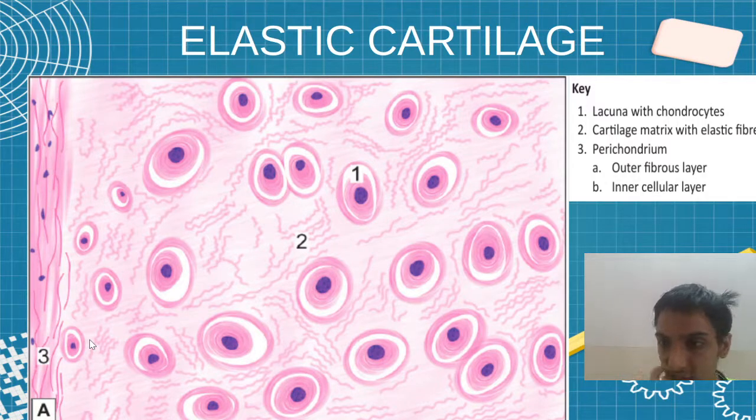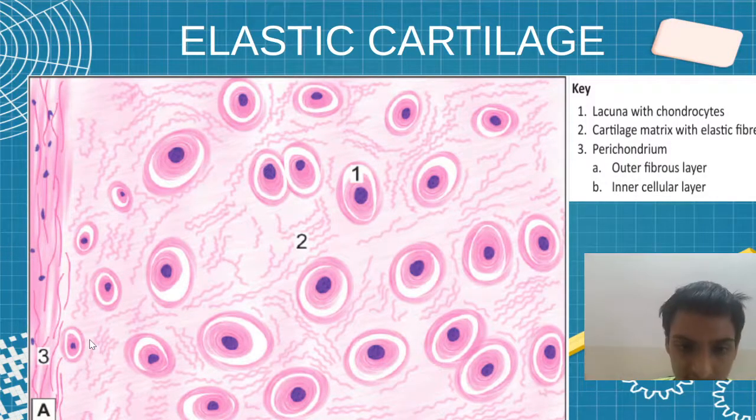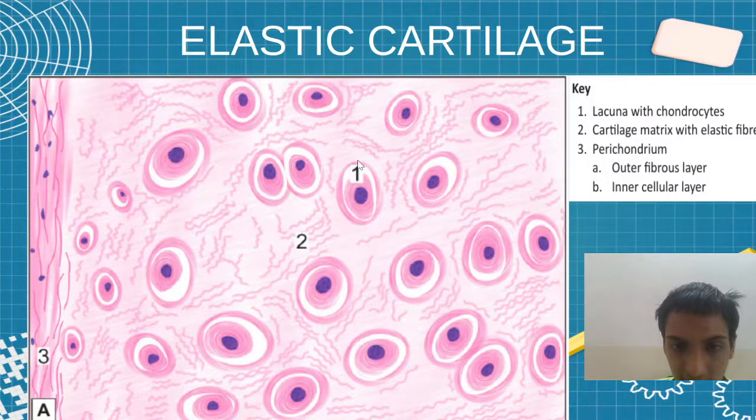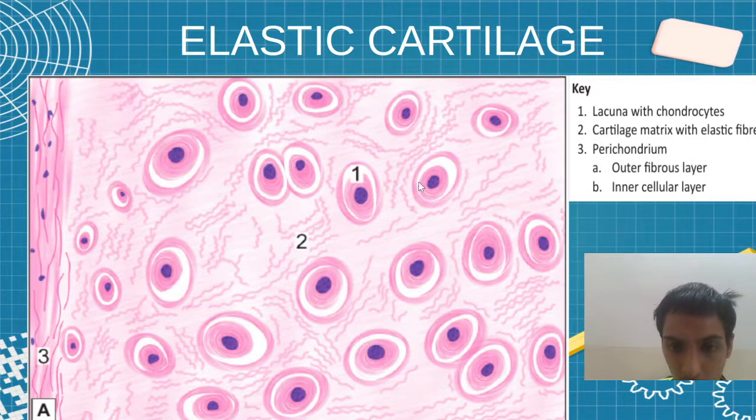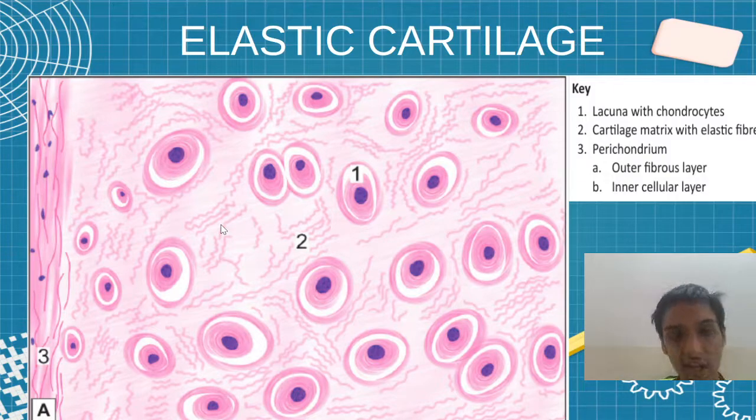Now in elastic cartilage, the important feature is the elastic fibers. The lacunae will be present with the chondrocytes. You are seeing chondrocytes in lacunae and a number of yellow elastic fibers.